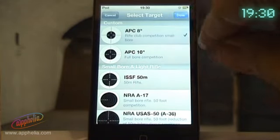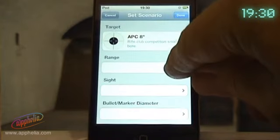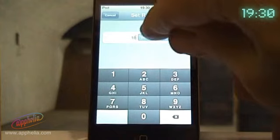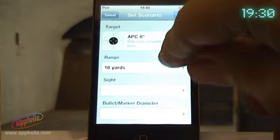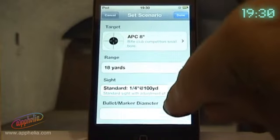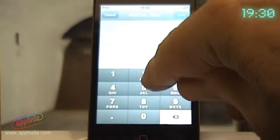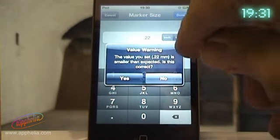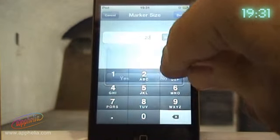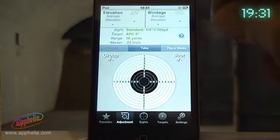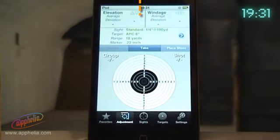First of all, we enter the target. This is a custom target which is around about seven and three-quarter inches across. Next we enter the range. The sight is a standard quarter inch at a hundred yard click setting, and the bullet diameter is 0.22 inches, and there's the target that we're going to shoot against.